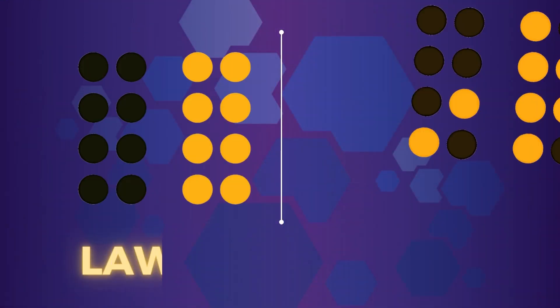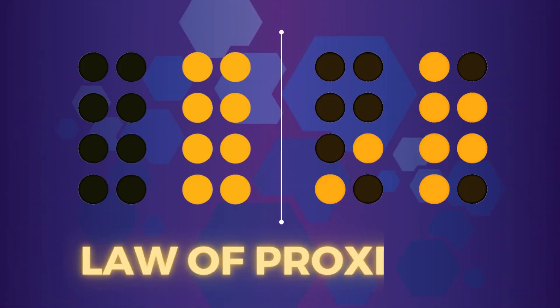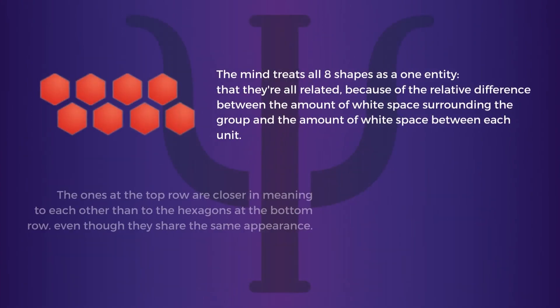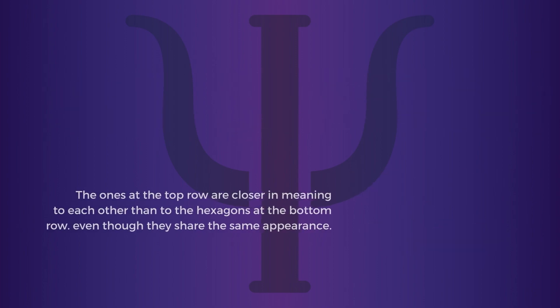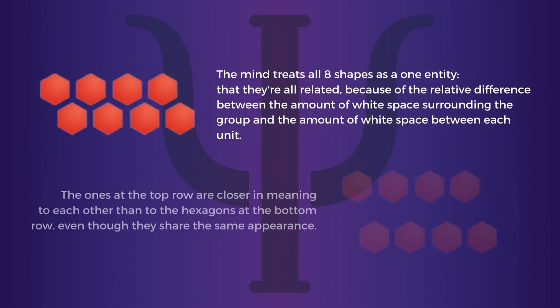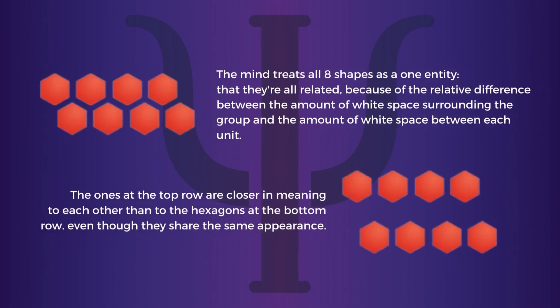The law of proximity says that we tend to group things together that are closer to each other. Elements in close proximity are perceived to share similar functionality or traits, and proximity helps users understand and organise information faster and more effectively.